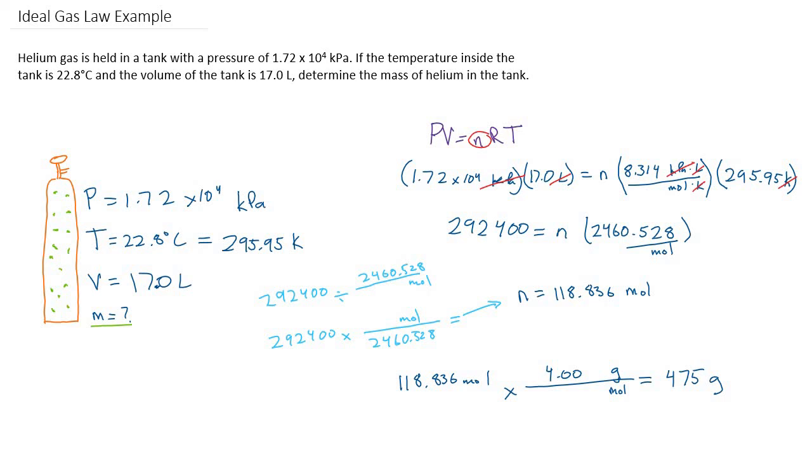That's just one example of using the ideal gas law. Of course you can solve for any variable P, V, n, or T. And in this case we've also taken the extra step to convert it into the number of grams.